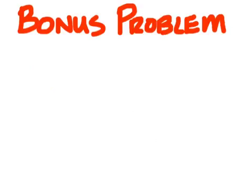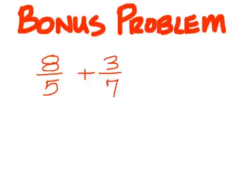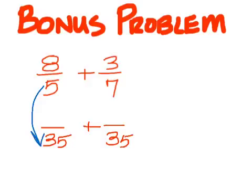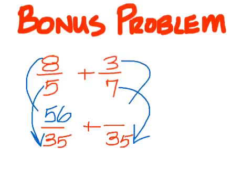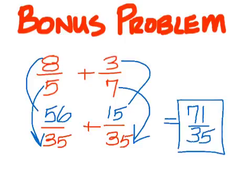Bonus problem is eight over five plus three over seven. The solution, the lowest number that both five and seven go into is thirty-five. Did you have that right? Now what do I multiply five by to get thirty-five? Seven. So eight times seven is fifty-six. And then what do I multiply seven by to get there? Five. So three times five is fifteen. What's fifty-six plus fifteen? Seventy-one. So it should have been seventy-one over thirty-five.